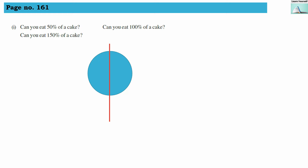Welcome to Learn Yourself. Think, discuss and write — page number 161. The questions are: can you eat 50% of a cake, can you eat 100% of a cake, and can you eat 150% of a cake? We are denoting these as questions a, b, and c. Let us first think about question a: can you eat 50% of a cake?